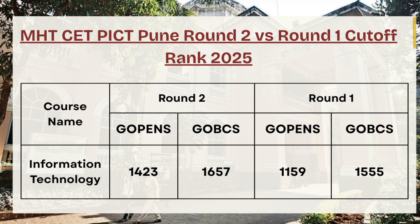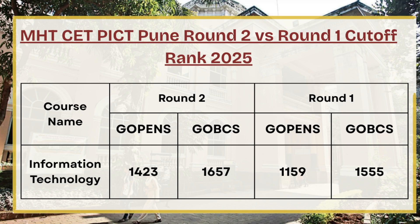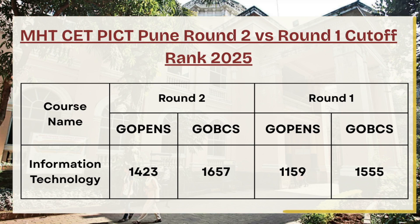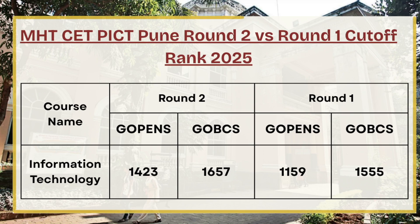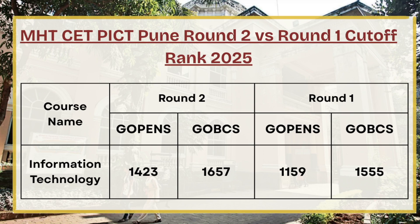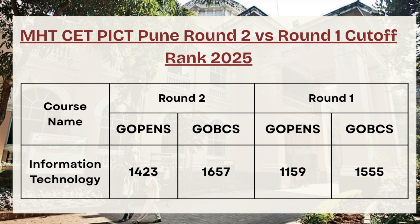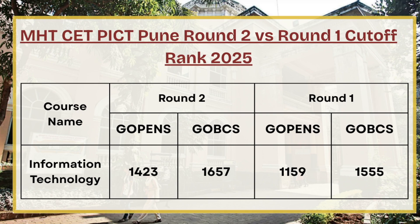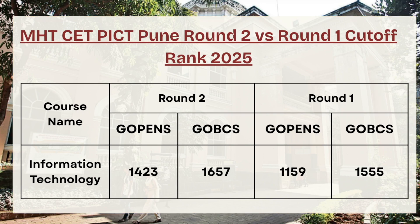For G OBC category in IT, the Round 2 cutoff is 1657 whereas Round 1 cutoff rank is 1555. There is a very slight difference of about 100 rank between Round 1 and Round 2 for G OBC category, so in Round 3 candidates can expect a range between 100 to 300 rank increment.